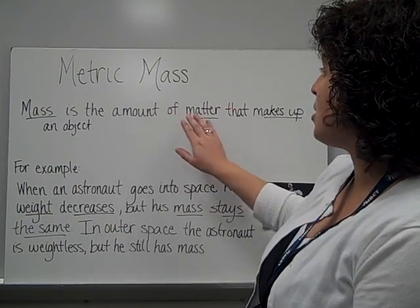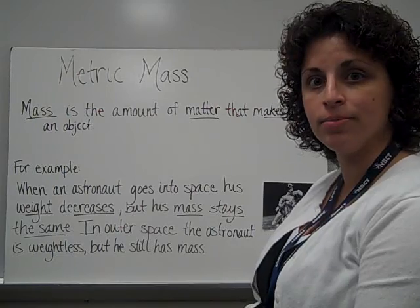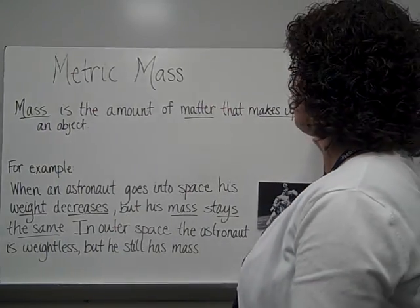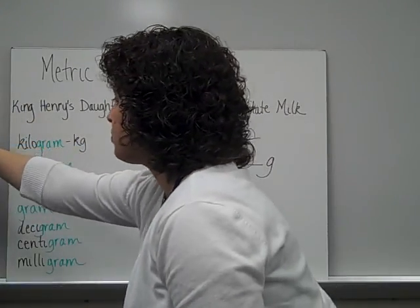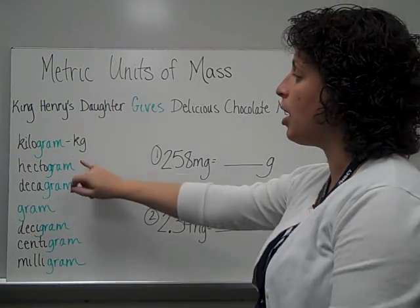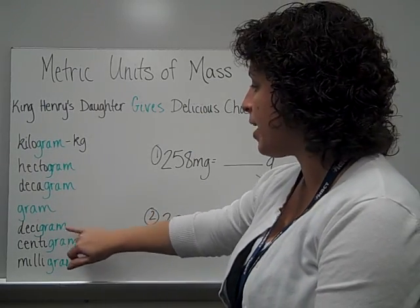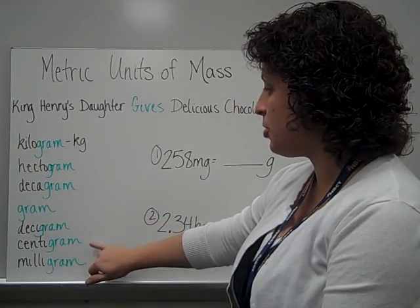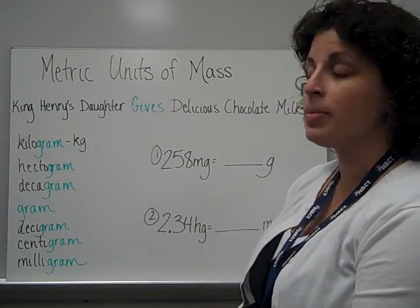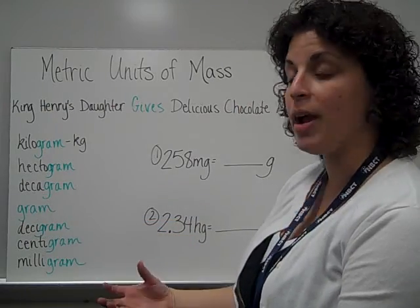Mass is the amount of matter that actually makes up the object. It's used for weight as well. The metric units of mass are kilogram, hectogram, decagram, gram, decigram, centigram, and milligram. Each of these, you notice, is made up of grams.